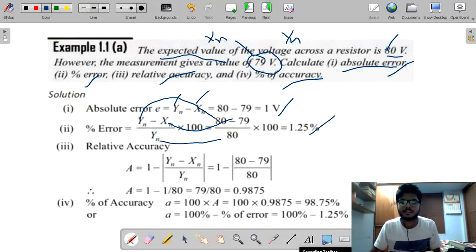Coming to relative accuracy. Relative accuracy is defined by letter capital A. Now, capital A equal to 1 minus error. 1 minus 80 minus 79 by 80. 1 minus 1 by 80. So, 79 by 80 equal to 0.9875.